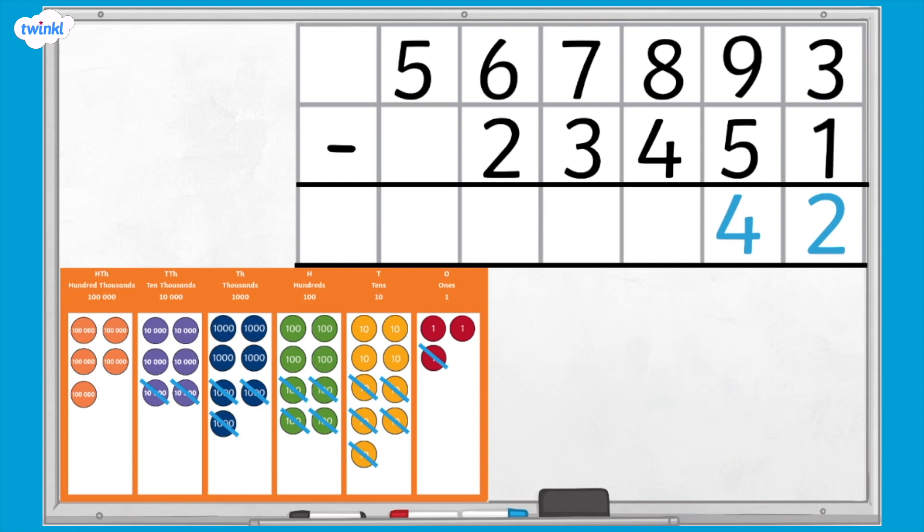We have eight hundreds subtract four hundreds which equals four hundreds. Seven thousands subtract three thousands equals four thousands. Six ten thousands subtract two ten thousands equals four ten thousands. Five hundred thousands subtract zero hundred thousands equals five hundred thousands.